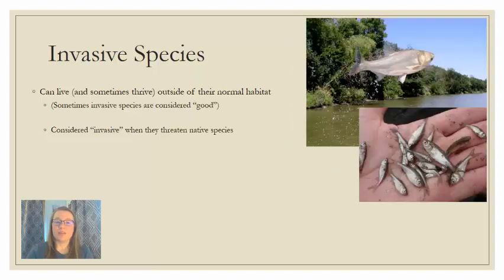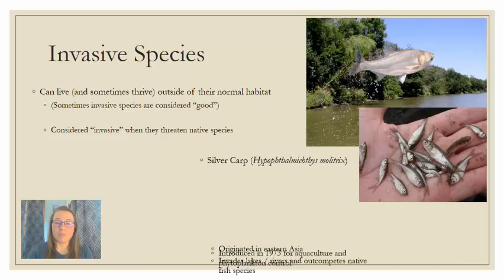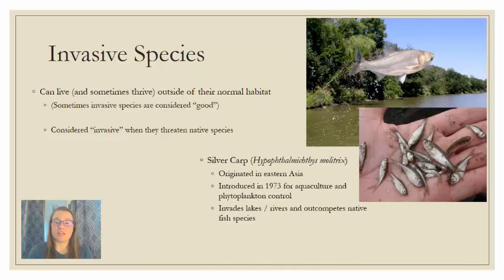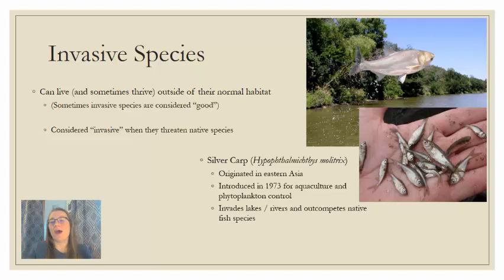Another invasive species is the silver carp, which originated in Eastern Asia and was originally introduced on purpose for aquaculture and phytoplankton control. It got out of hand, invading lakes and rivers, and outcompetes native fish species for food. It's also quite dangerous to boaters because these fish will jump out of the water — they're like flying fish.